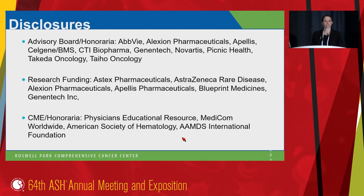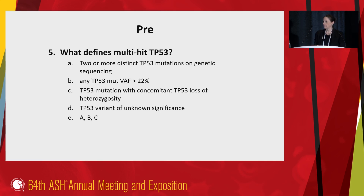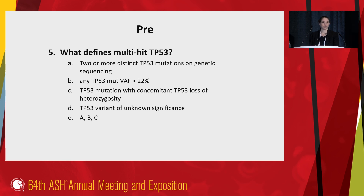These are my disclosures. We've been asked to start with a question. The pretest question is: what defines the multi-hit state in TP53? A, two or more distinct TP53 mutations; B, any TP53 variant allele frequency greater than or equal to 22%; C, TP53 mutations with concomitant loss of TP53 locus heterozygosity; D, TP53 variants of unknown significance; or E, A, B, and C. Please select your answer.